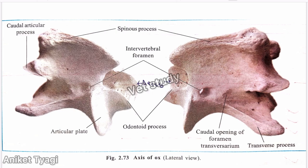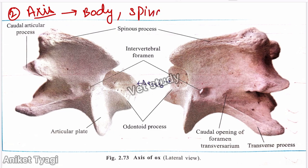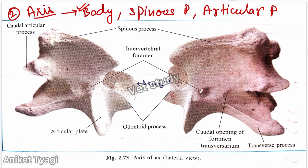Now let's talk about the second cervical vertebra — the axis. This vertebra is named axis because the skull along with the atlas rotates around it. The body is long, and the ventral spine is extended caudally. At the cranial end, the most important feature is the odontoid process, which is the modified cranial part of the body and is projected as a plate.